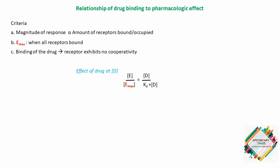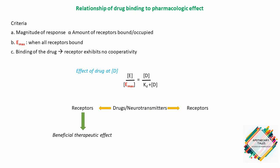If a specific population of receptors mediates a physiological effect, the affinity of an agonist for those receptors should relate to its potency for causing that effect. It should be remembered that many drugs and most neurotransmitters can bind to more than one type of receptor, thereby causing both desired therapeutic effects and undesired side effects. This lack of specificity, where a drug binds to more than one receptor population, leads to both wanted and unwanted effects.